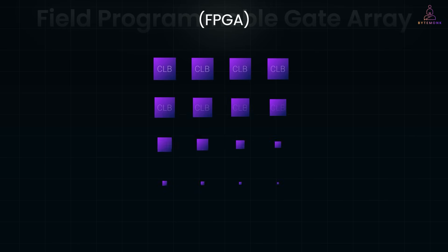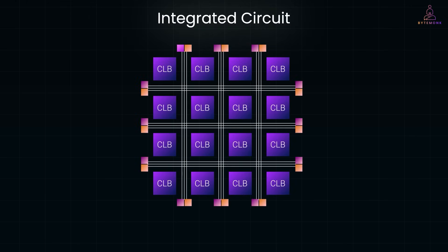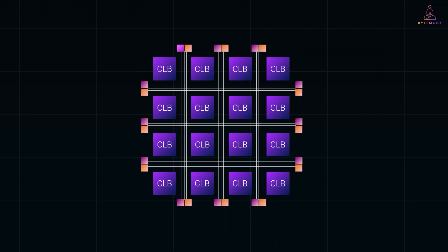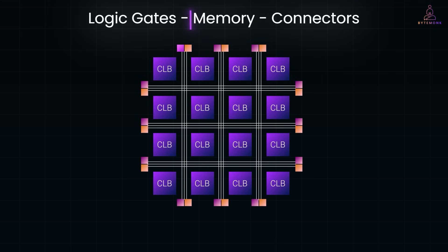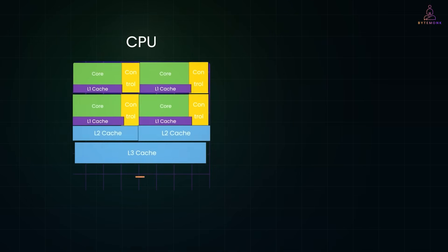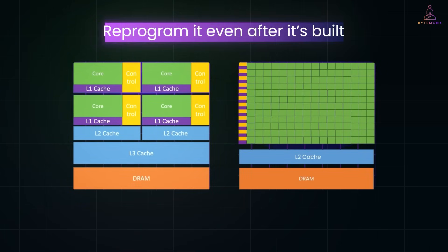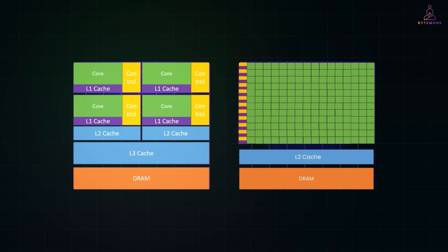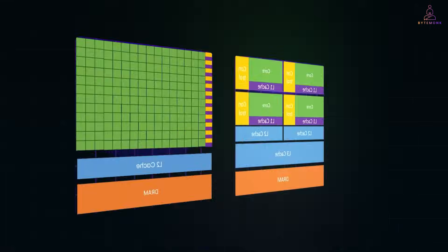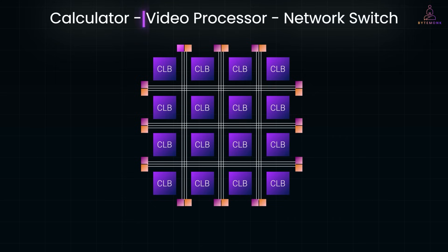A field programmable gate array, or FPGA, is a special type of integrated circuit or IC — a chip that contains many tiny electronic components like logic gates, memory and connectors. What makes an FPGA different from a regular chip like a CPU or GPU is that it's not locked into one function. You can reprogram it even after it's built, allowing it to behave like a custom piece of hardware. Think of it like a blank Lego board — you decide what kind of structure to build, whether a calculator, a video processor or a network switch, by wiring the pieces together however you like.